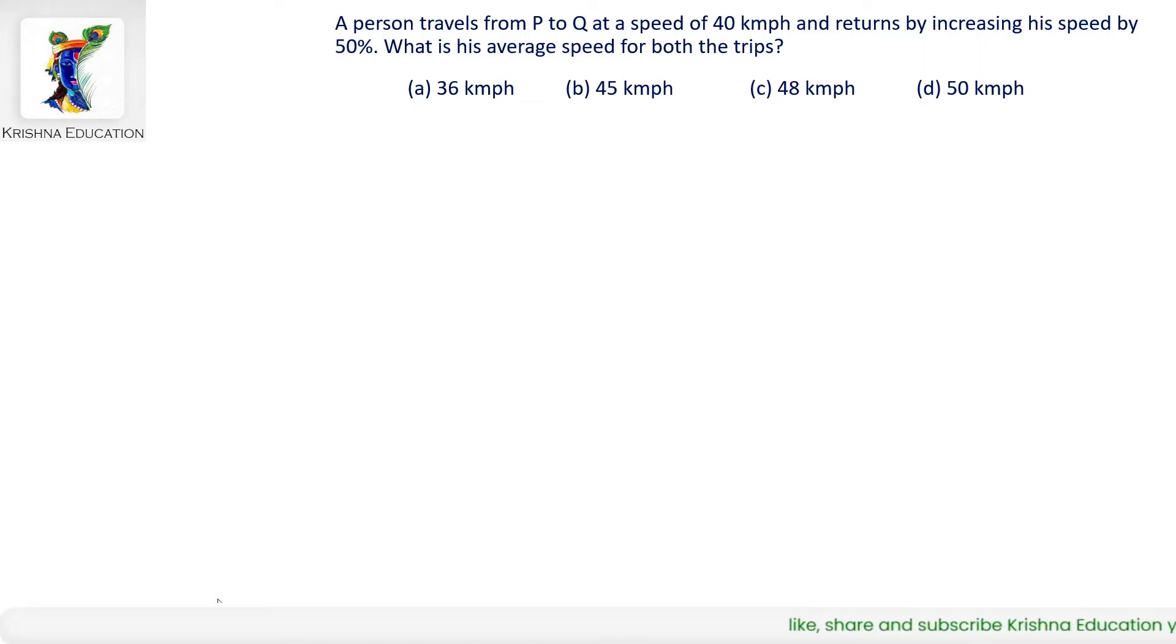A person travels from P to Q at 40 km per hour and returns by increasing speed by 50%. What is the average speed on both the trips?